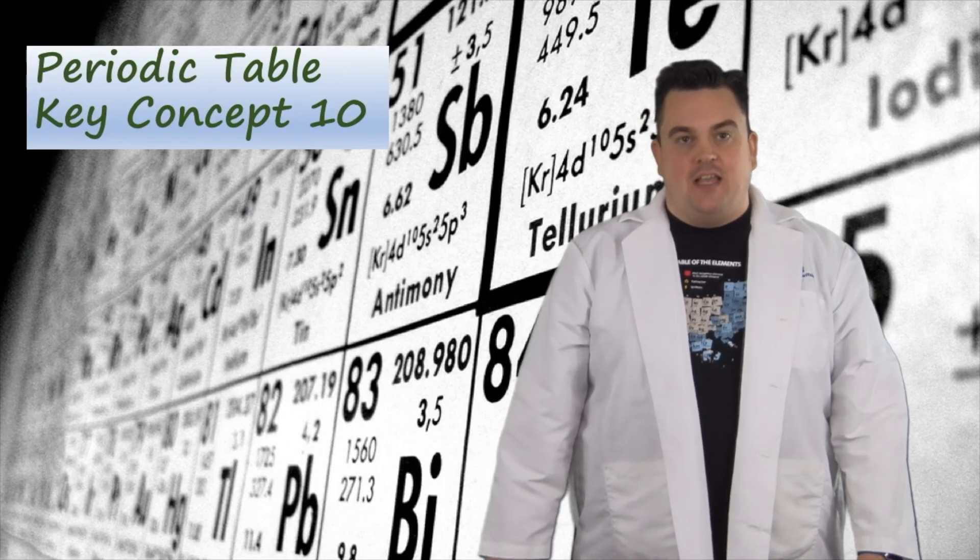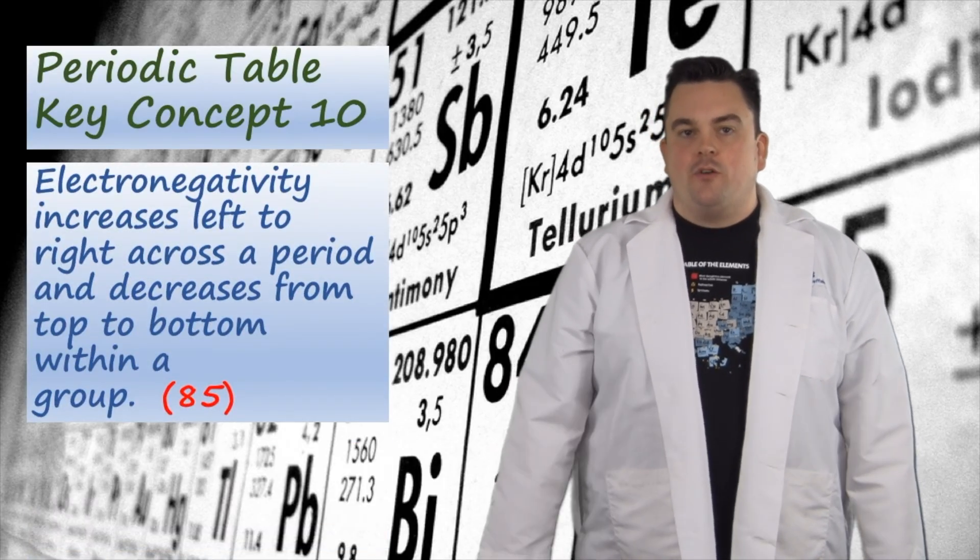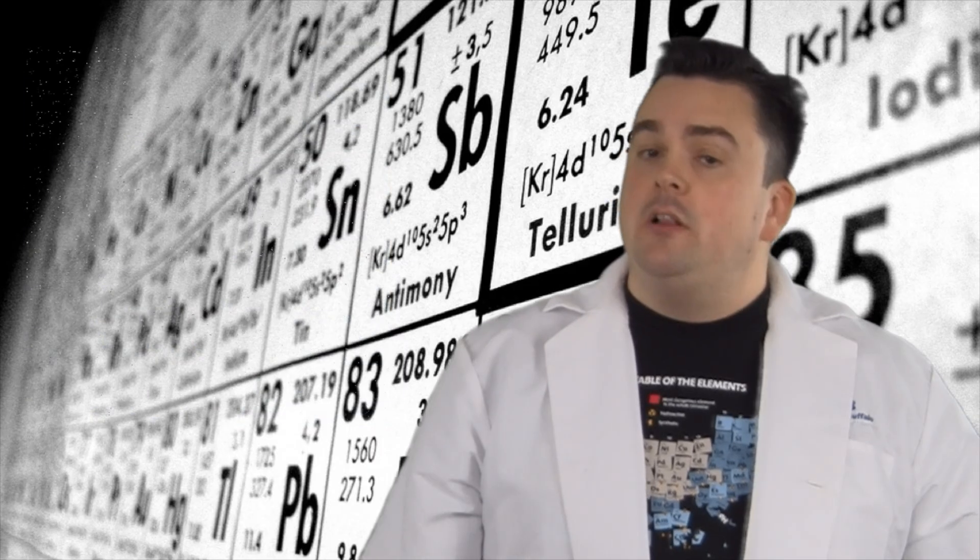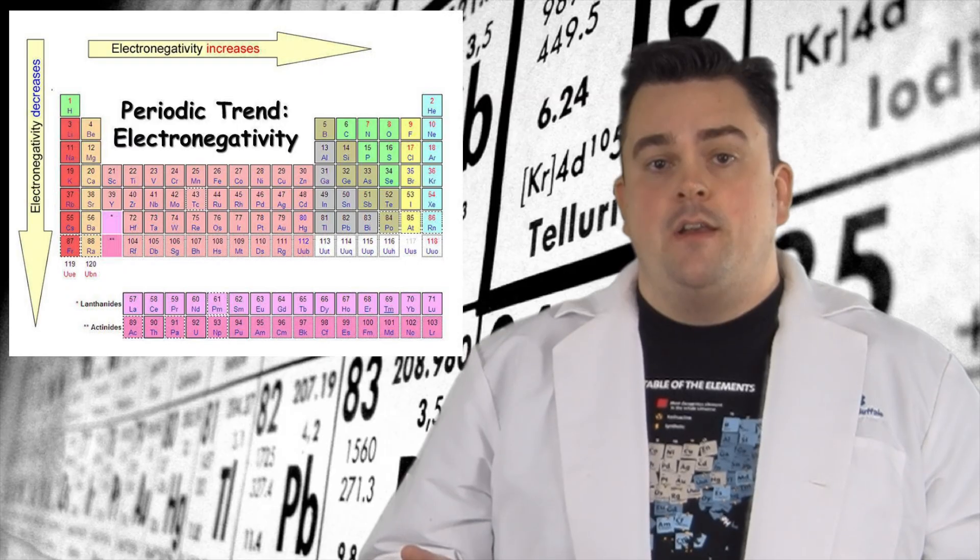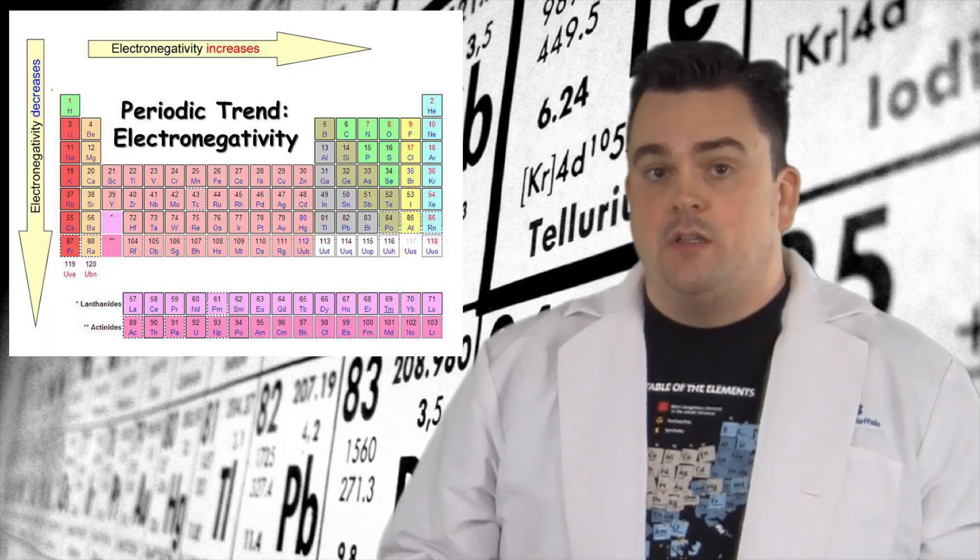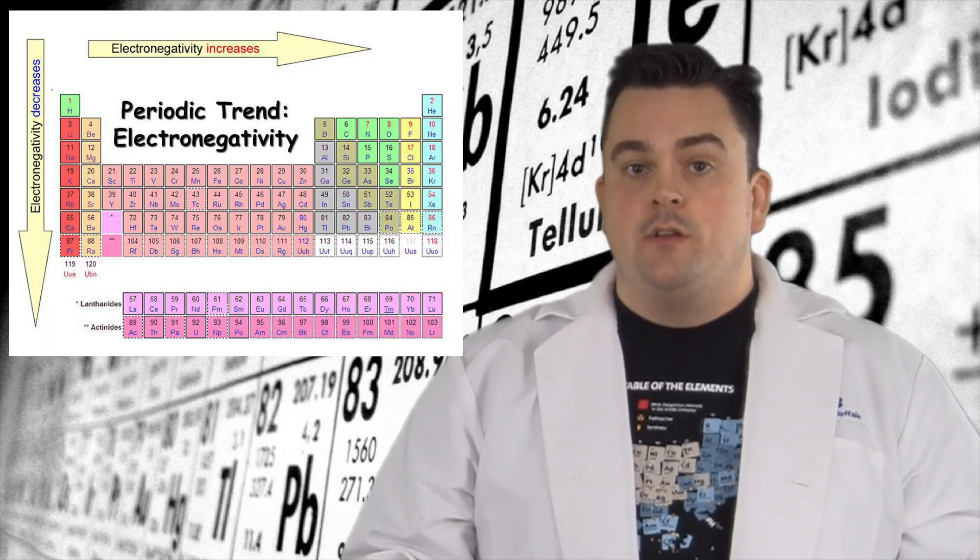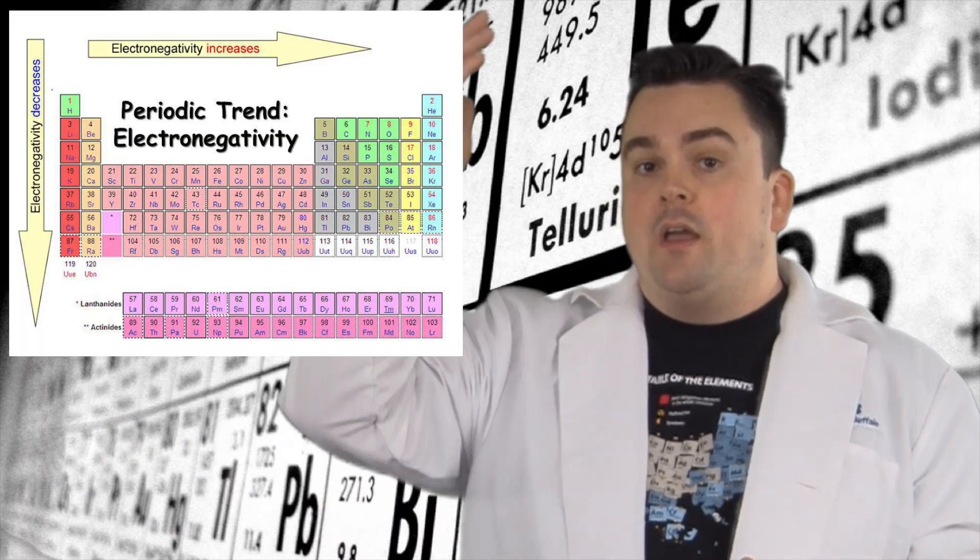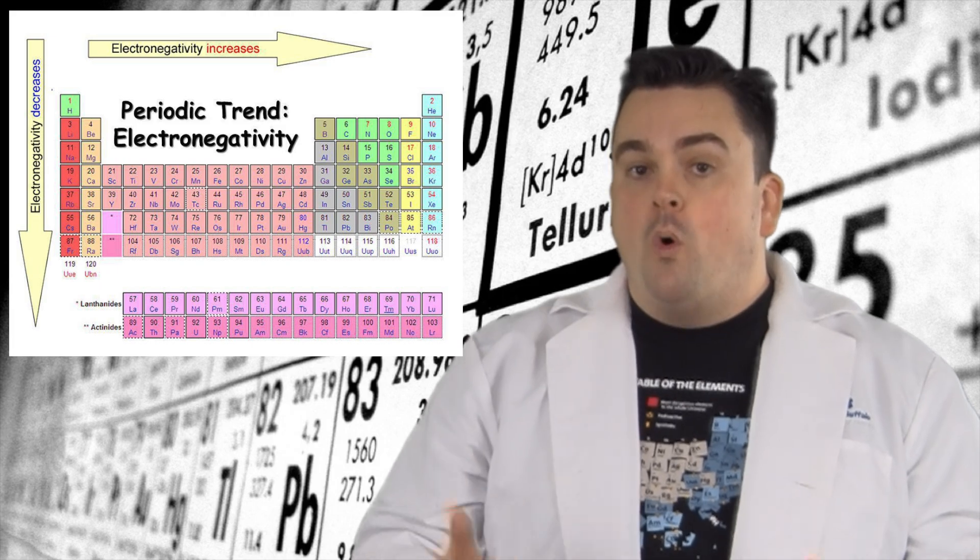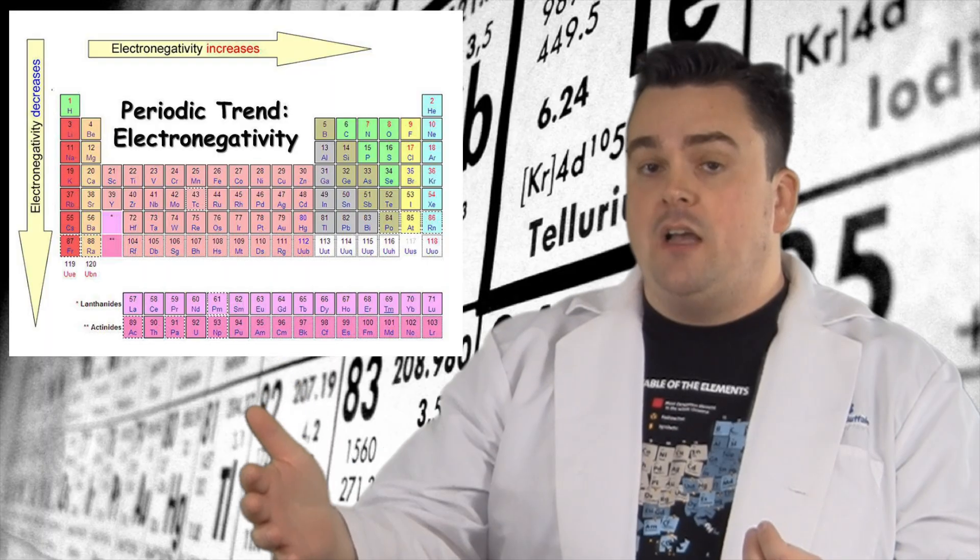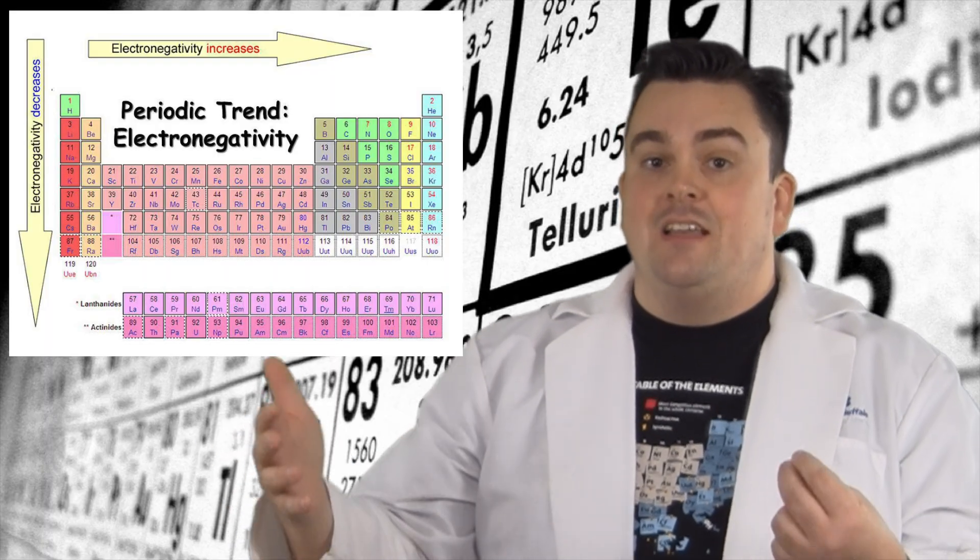Periodic Table Key Concept 10. Electronegativity increases left to right across a period and decreases from top to bottom within a group. Now, electronegativity is defined as the ability to attract electrons. Now, going across a period, we get more protons with each successive element in a greater nuclear charge. Therefore, the attraction increases going from left to right. Now, going top to bottom in a group, you have more PELs, or more shells, so that distance from the nucleus to the outermost shell is greater, which means the attraction is less.